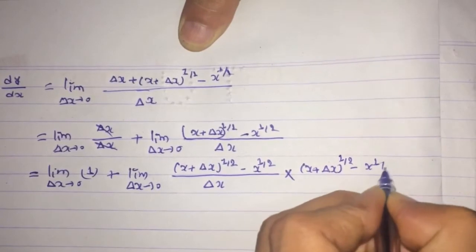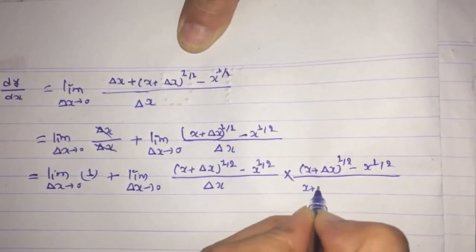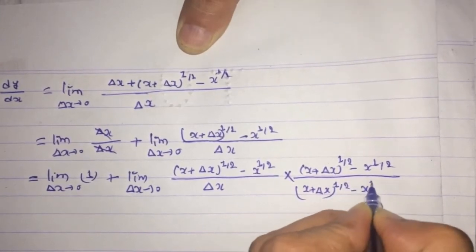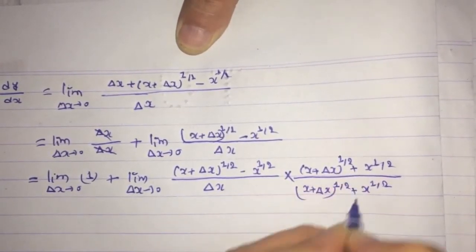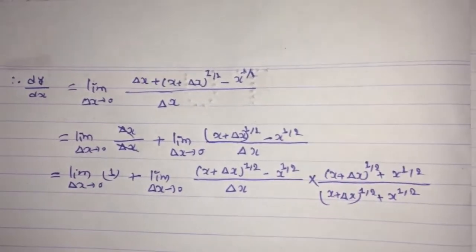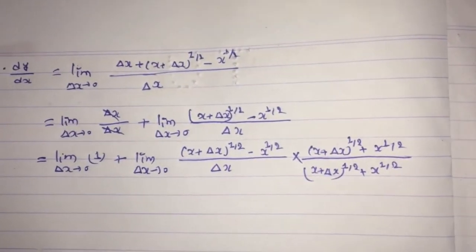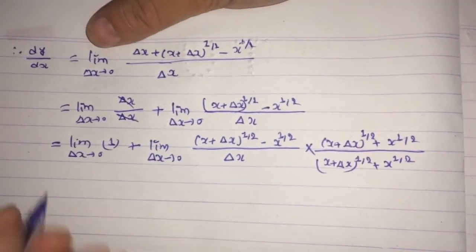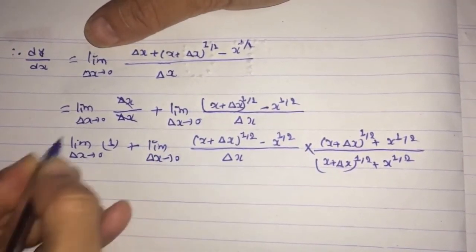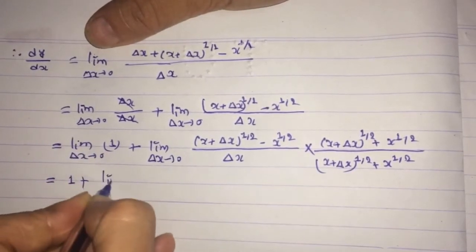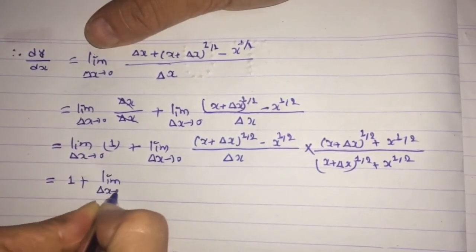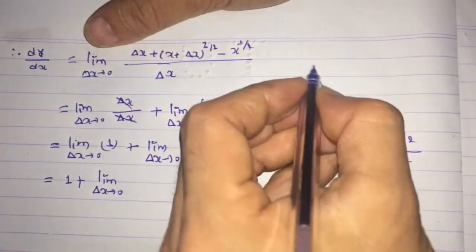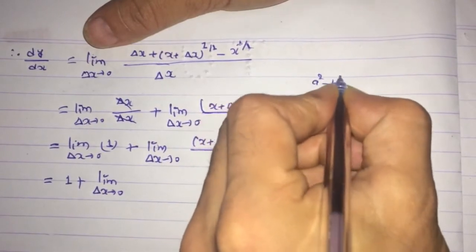We multiply by the conjugate [(x + δx)^(1/2) plus x^(1/2)] over [(x + δx)^(1/2) plus x^(1/2)], taking a plus sign so that we can form the identity a² minus b² equals (a + b)(a − b).